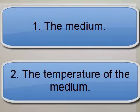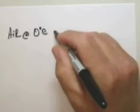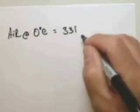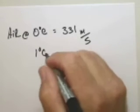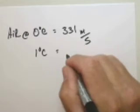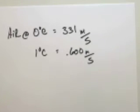According to one of the tables in your textbook, you can see that air at zero degrees Celsius would support a speed of 331 meters per second. For every increase in one degree, speed of sound will increase 0.600 meters per second.